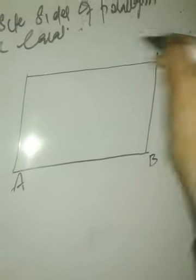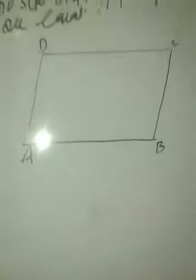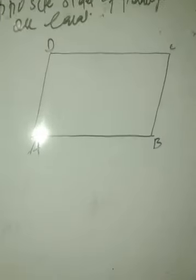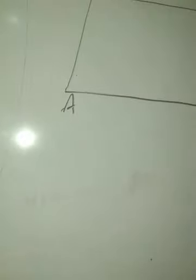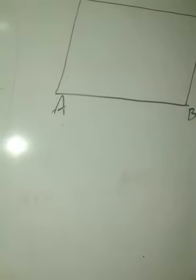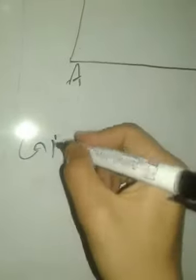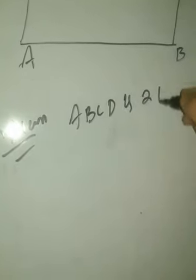We have a parallelogram ABCD. To prove any theorem you should have an idea about the three steps: Given, To Prove, and Proof. We have already gone through these steps before. Now we will write: Given — ABCD is a parallelogram.